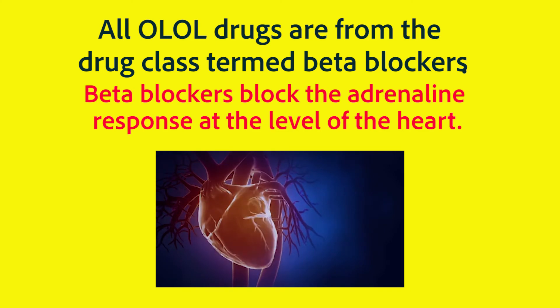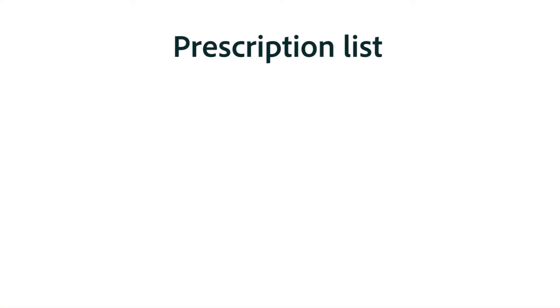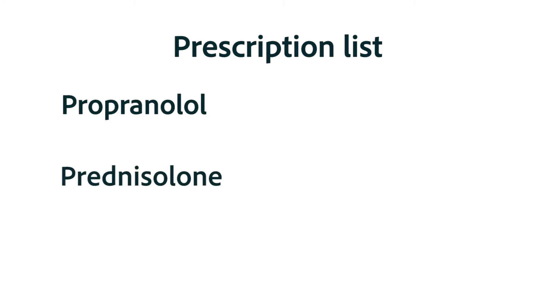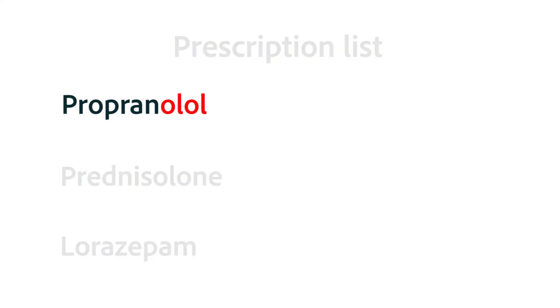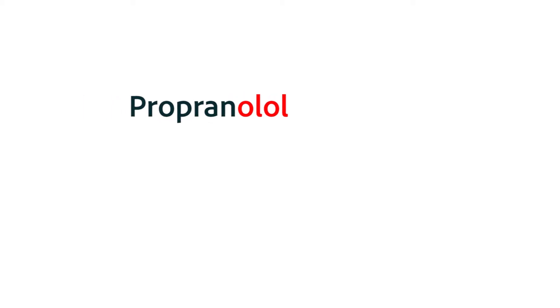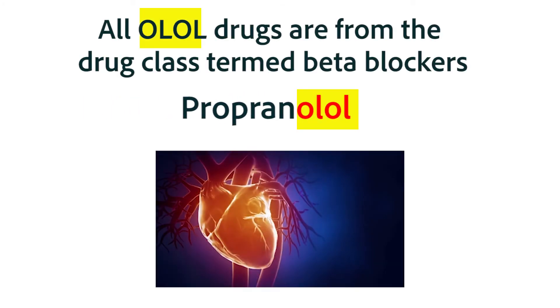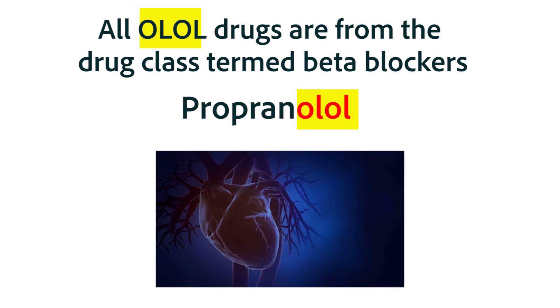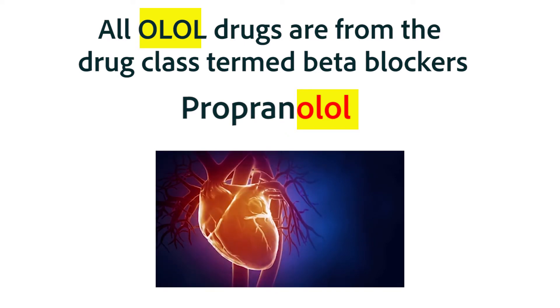Here's a question for you. You're looking at a list of medications that a client is taking: propranolol, prednisolone, and lorazepam. Pick one of the medications and very briefly describe what it does. Although you've probably never seen propranolol before, you may have noticed the -olol suffix. That tells you it's a beta blocker, which decreases the heart rate and therefore decreases the blood pressure.